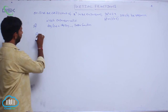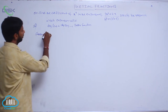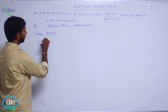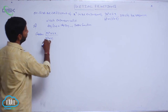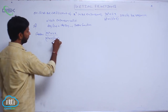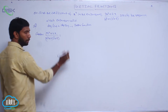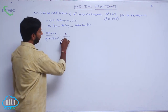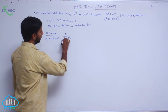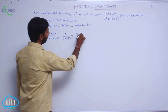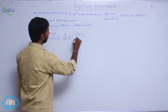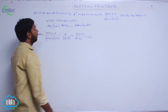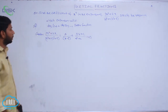Consider (3x² + 2x) / [(x² + 2)(x - 3)] expressed into partial fractions: A/(x - 3) + (Bx + C)/(x² + 2). Consider this as condition number 1.